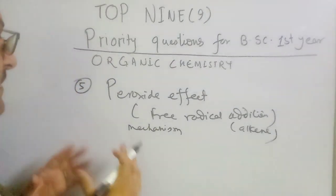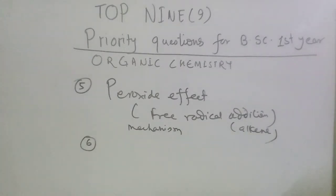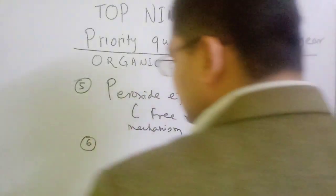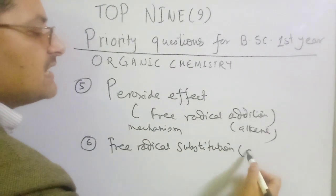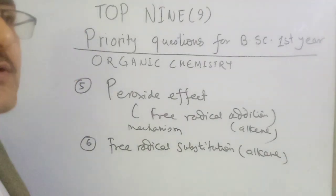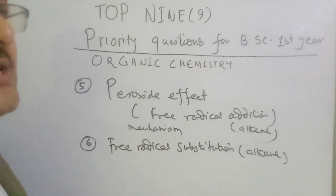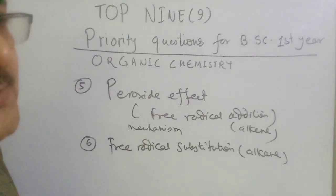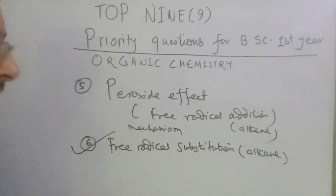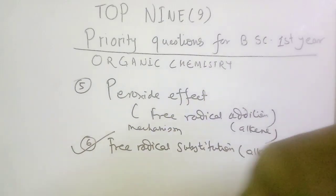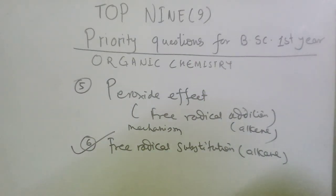Those are the top five questions. Now let's go to number six: free radical substitution reaction. This is from the alkane chapter. Free radical substitution reaction involves three steps: chain initiation, chain propagation, and chain termination. You can find the details in my BSc Posture playlist. These are all high priority questions for BSc Posture organic chemistry.